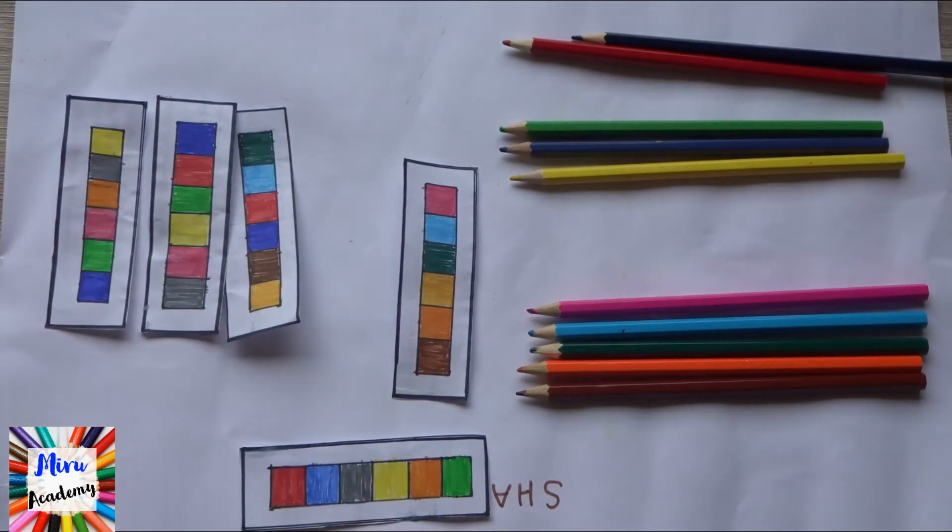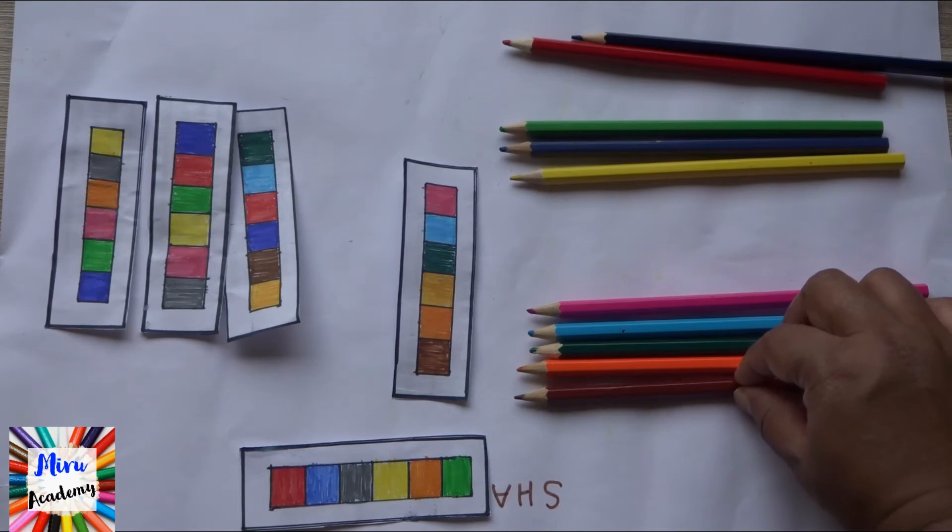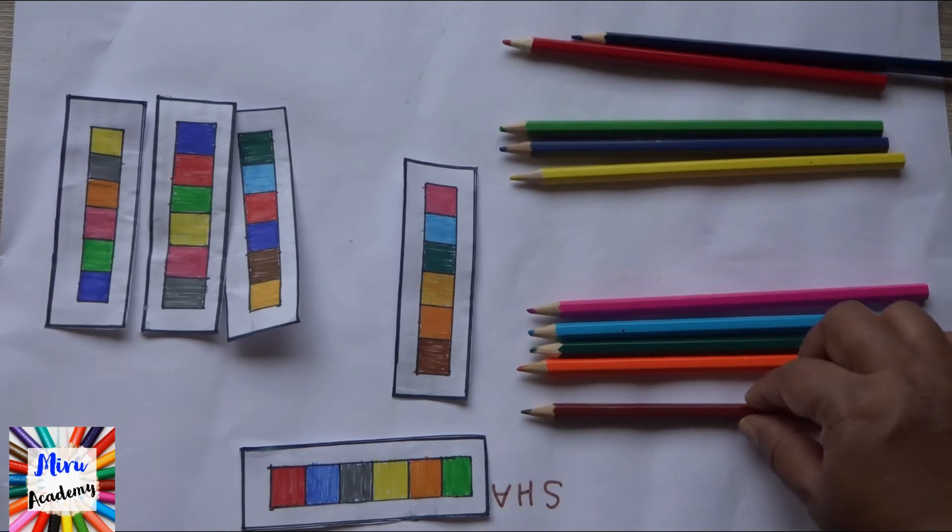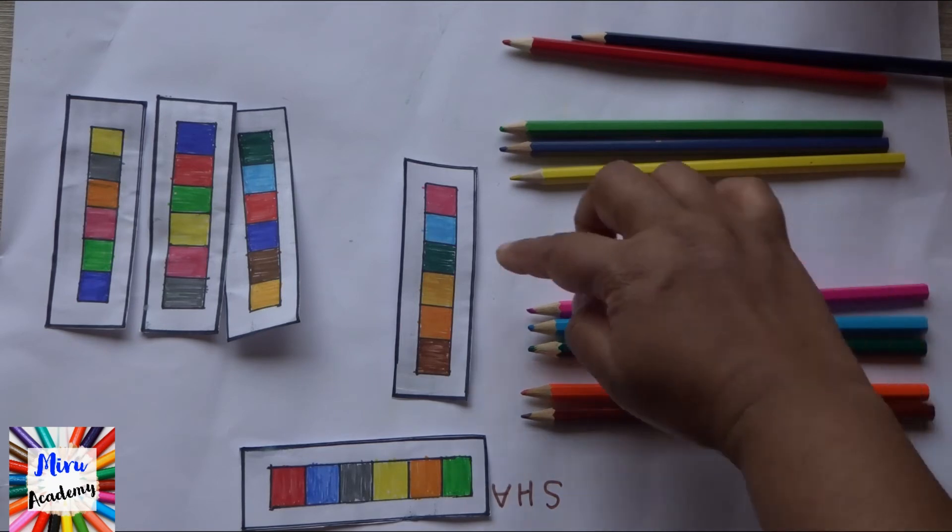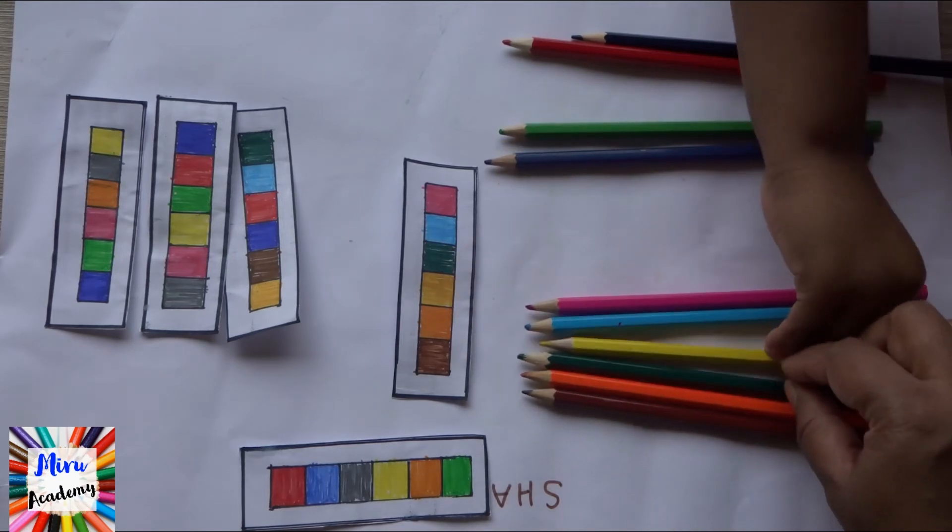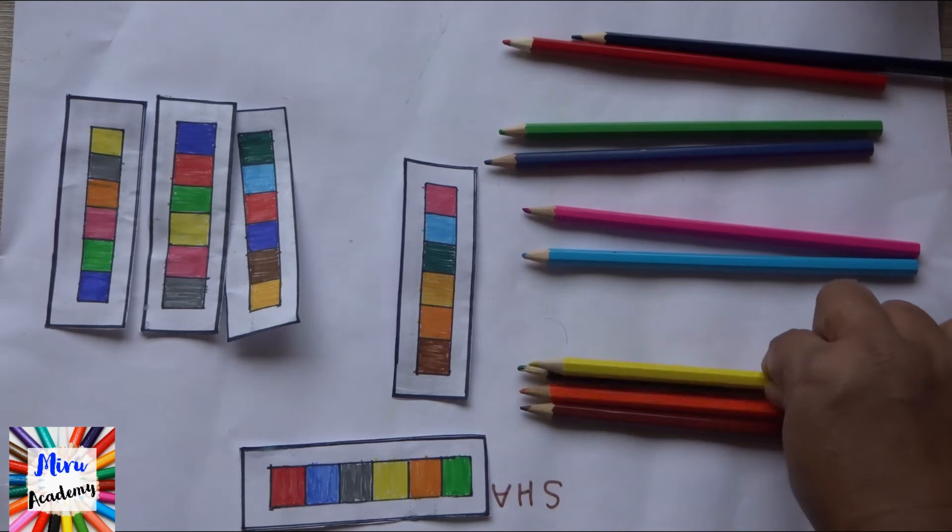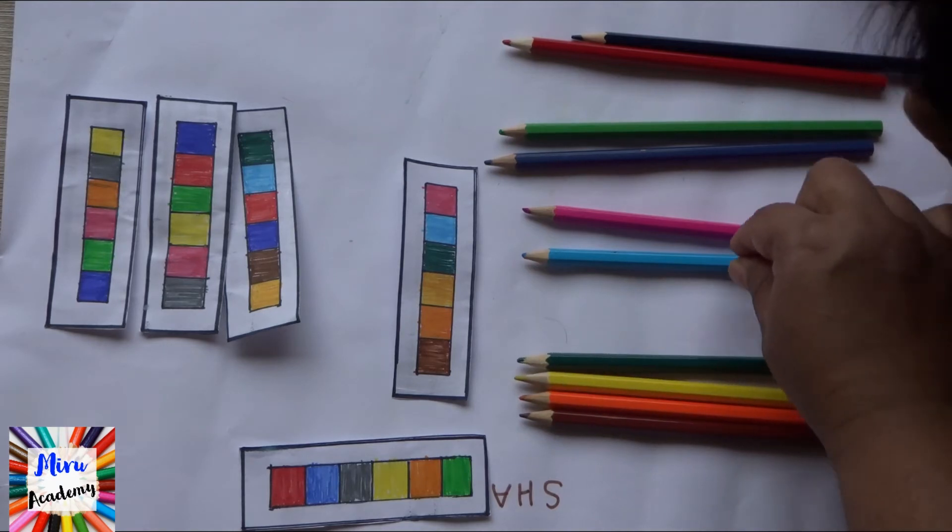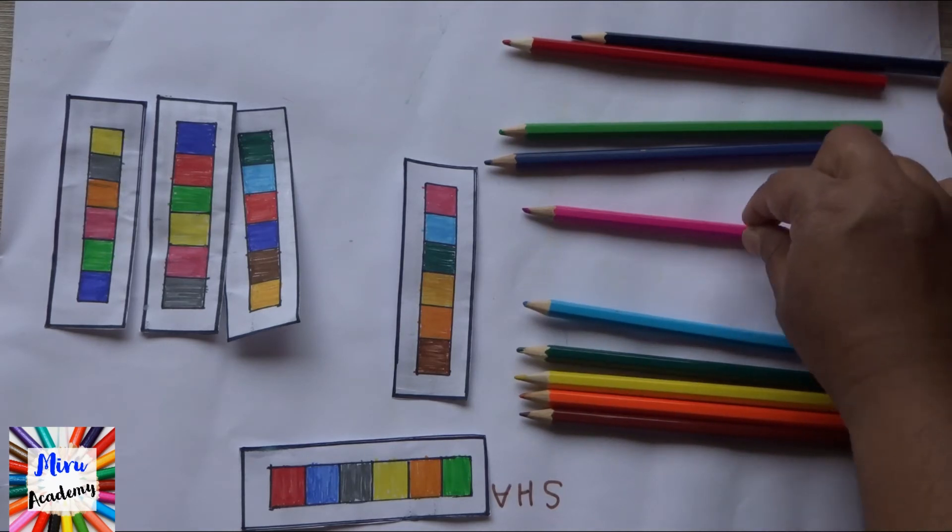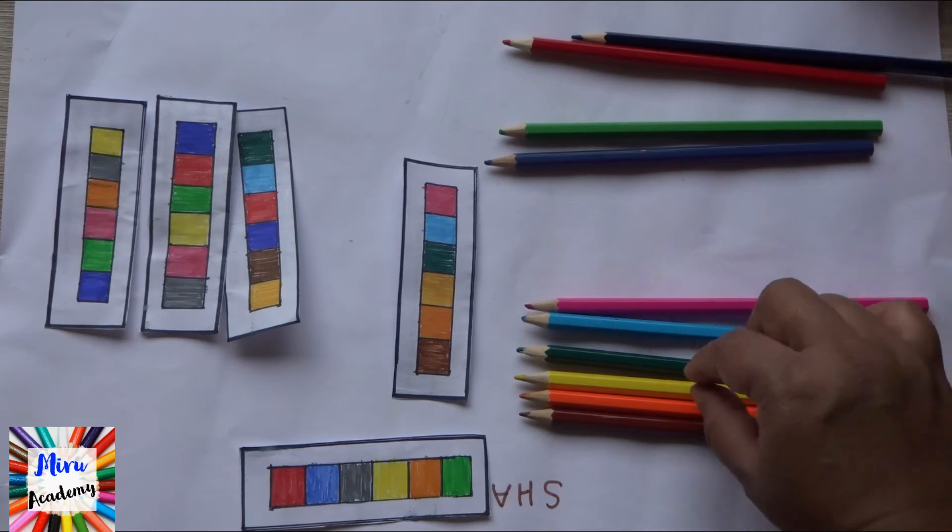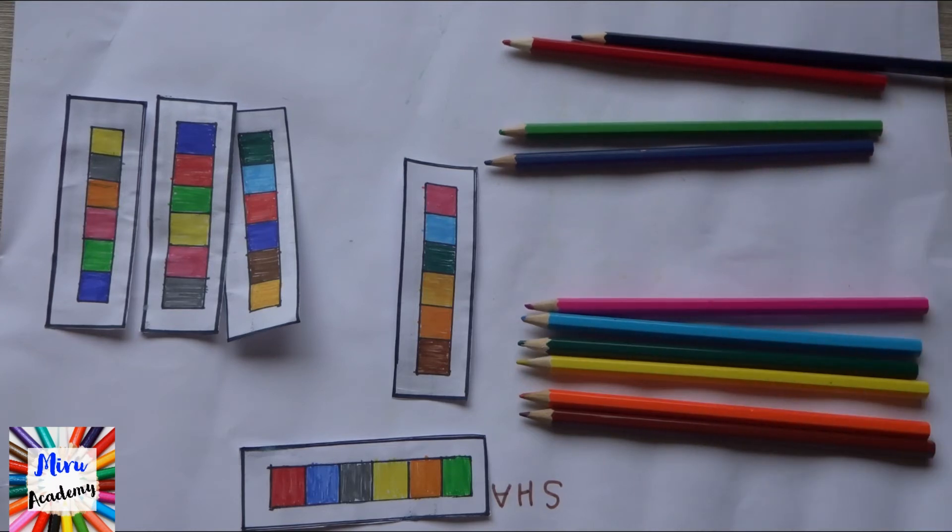So shall we check it? Yes. So first one is brown, is it correct? Yes, very good. Next, hello, you didn't keep it. Okay, next is green, then blue, then pink. So you missed out the yellow color. Next time you are not supposed to miss the yellow color.